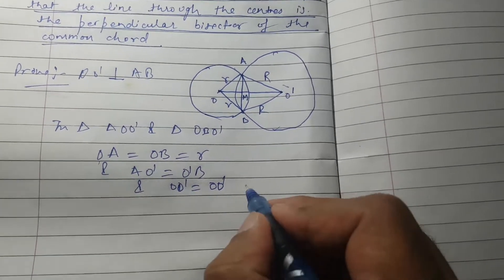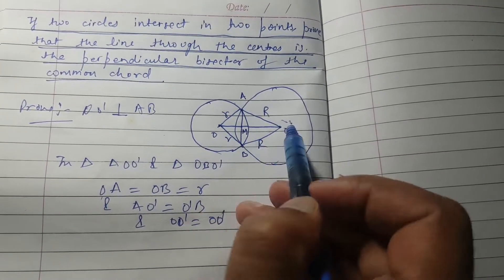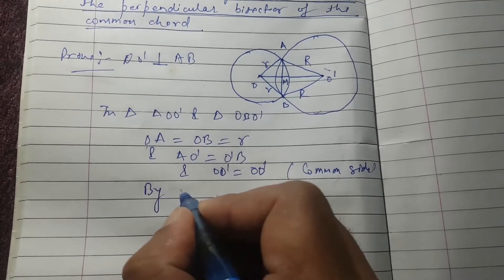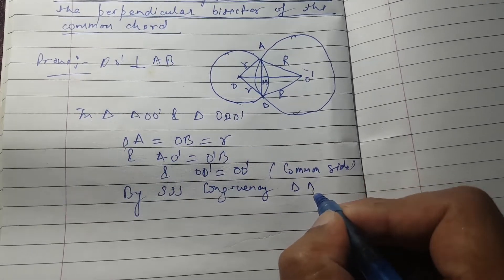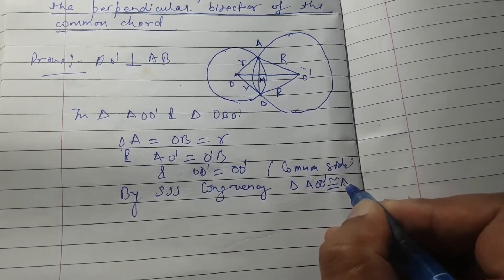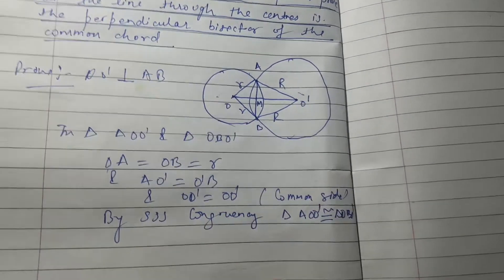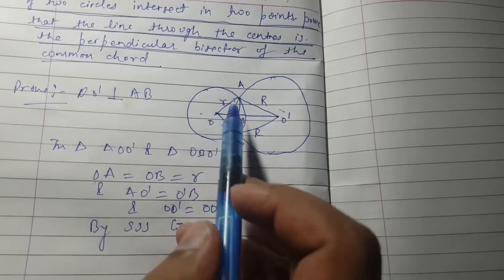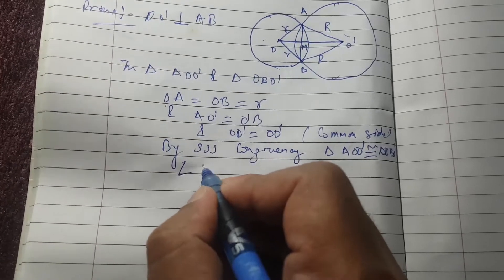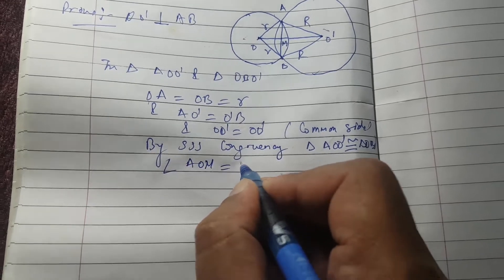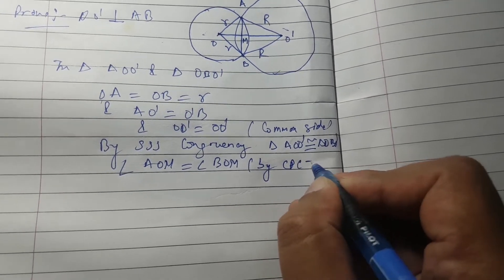So by the Side-Side-Side (SSS) congruency rule, triangle AOO' is congruent to triangle BOO'. Therefore, by CPCT, angle AOM is equal to angle BOM.